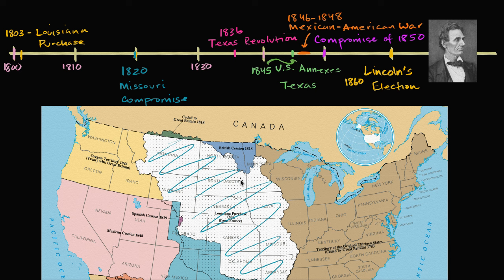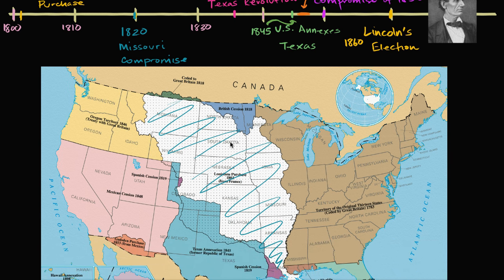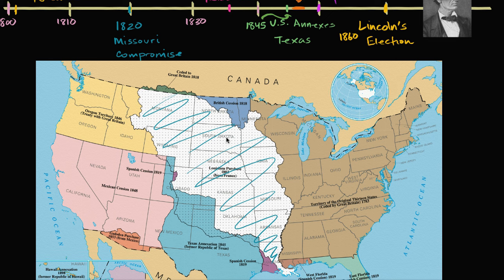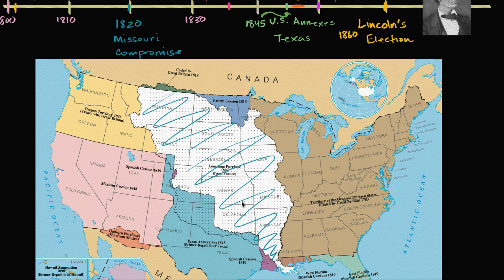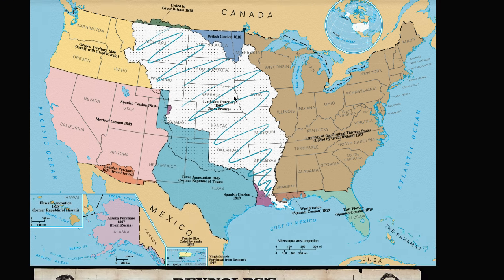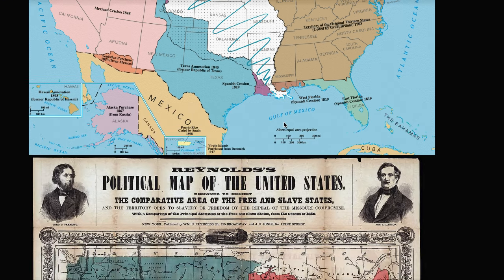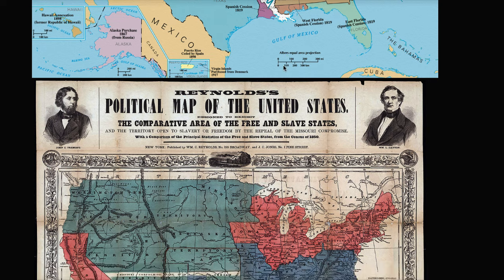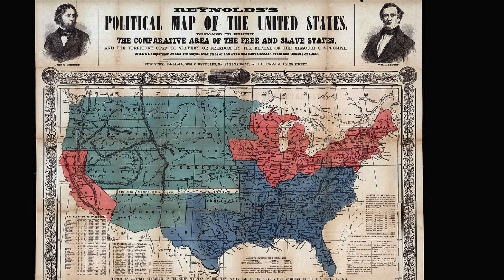When new states come into the Union, they're going to come in as either free states or slave states. We've balanced the interests of the North and South up until this point from the Revolutionary War, so that there's equal representation in Congress between free states and slave states. Why does someone care? If I'm someone in Massachusetts, why do I care whether the new state of Missouri is going to be a free state or a slave state?